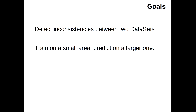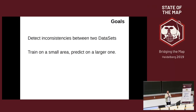There are in fact two goals. First is to be able to detect inconsistencies between two datasets. And the other goal is the ability to train a model on a small area and then to predict on a larger one. So in fact there are two goals and you can use one or the other.